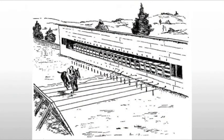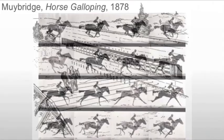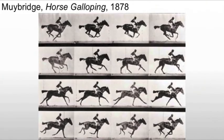He sets up the first sequential photograph. What he does is he sets a series of cameras up with strings, and as the horse gallops along it trips the various shutters of all of these cameras. The result is 'Horse Galloping.'